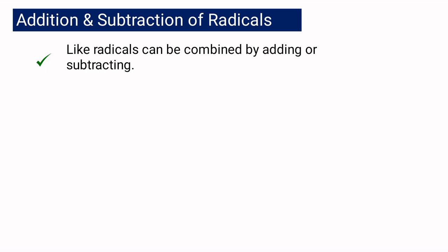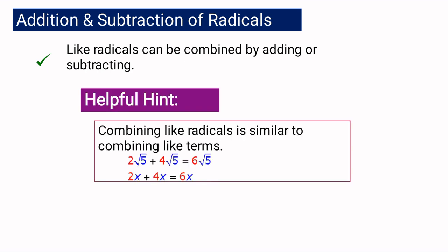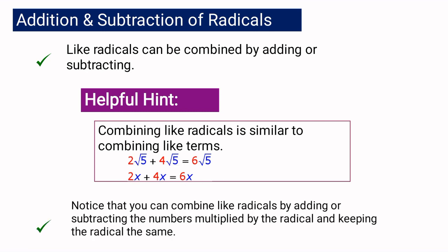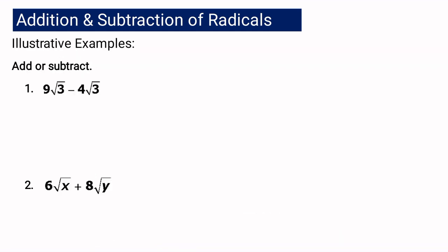Like radicals can be combined by either adding or subtracting. For you to add or subtract, here is the hint: if you have 2 square root of 5 plus 4 square root of 5, it is equal to 6 square root of 5. Adding radicals is just like adding algebraic expressions — we are going to consider the common or like radicals as if it is a variable, and then what you are going to do is keep that variable and just add or subtract the numerical coefficients. You have to notice that when you combine like radicals, you are just going to keep the radical the same.